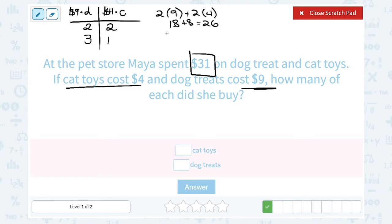Let's check this out and see if it works. If she buys three dog treats at $9 each, and one cat toy at $4, well, three times nine would be 27 and one times four would be four. When we add that together, 27 plus four, it gives us 31.